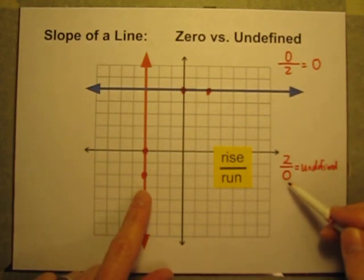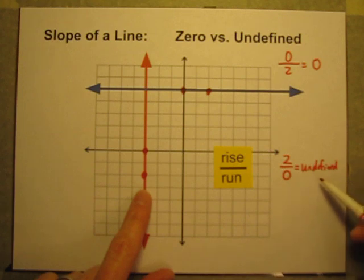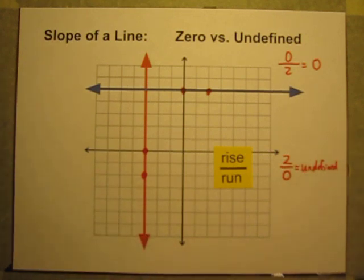Anytime the run is zero, it's undefined. And the reason is because you can't divide by zero. Why can't you divide by zero?